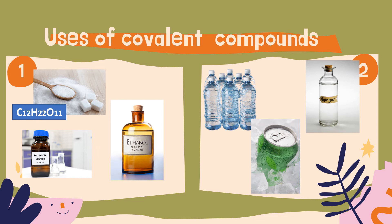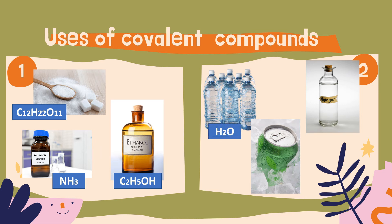Here are some uses of covalent compounds. Number one is sucrose or table sugar, used as a sweetener for cooking or baking. Then we have ammonia, a covalent compound used in soap, detergent, washing bars, and other cleaning liquids. Then we have ethyl alcohol or ethanol, used as a disinfectant. Then we have water, one of the most important substances, essential for daily and domestic use. We also have carbon dioxide, a covalent compound used in soft drinks and other fluids. And we have acetic acid or vinegar, used for cooking.